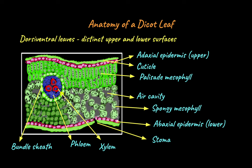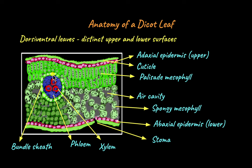The veins that we talked about exist in the form of reticulate venation in dicot leaves. Veins in the reticulate venation are made up of the vascular tissues — the phloem and xylem. The vascular tissues are surrounded by a layer called bundle sheath cells. Bundle sheath cells are modified parenchymatous cells that protect the vascular bundles and also aid in the movement of water and nutrients.